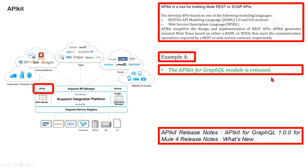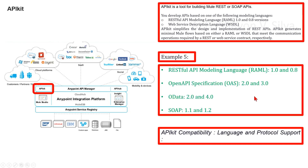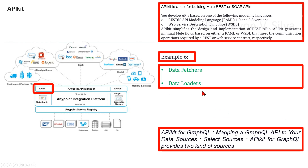In APIkit compatibility, the language and protocol support includes: RESTful API Modeling Language RAML 1.0 and 0.8, Open API Specification OAS 2.0 and 3.0, OData 2.0 and 4.0, and SOAP 1.1 and 1.2. For selecting sources in mapping a GraphQL API to your data sources in APIkit for GraphQL, module sources vary depending on the implementation of your GraphQL API. APIkit for GraphQL provides two kinds of sources: data fetchers and data loaders. Your selection depends on your implementation needs. GraphQL is transport-layer agnostic, so you choose the main connector listener depending on the protocol you want to serve your data.